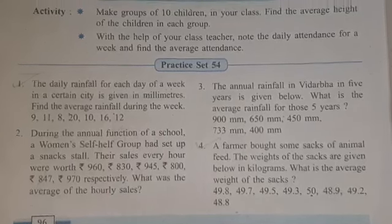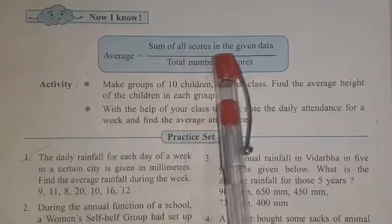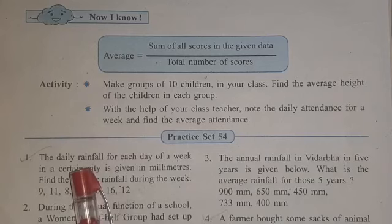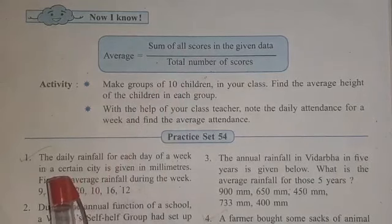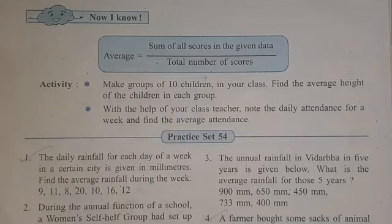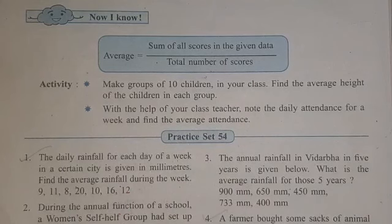We all have learned the average formula. The formula is: sum of all scores in the given data upon total number of scores. In this question we are having scores related to daily rainfall, so we are going to write: sum of daily rainfall for each day of a week, upon number of days.